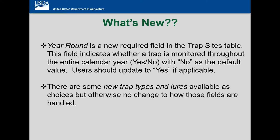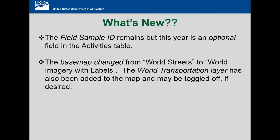There are also some new trap site types, trap types, and lures available as choices. Otherwise, no change as to how those fields are handled — pretty simple so far. We also have a field, Sample ID, that is remaining but is optional this year. Last year it was a required field.